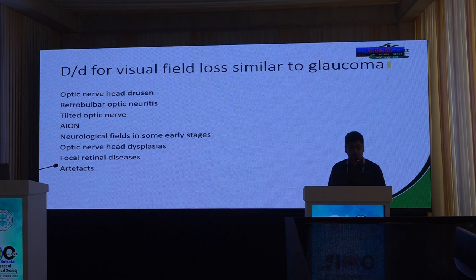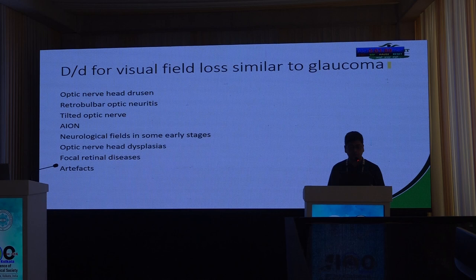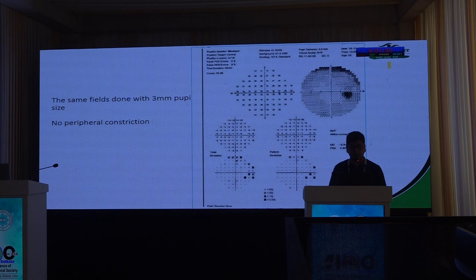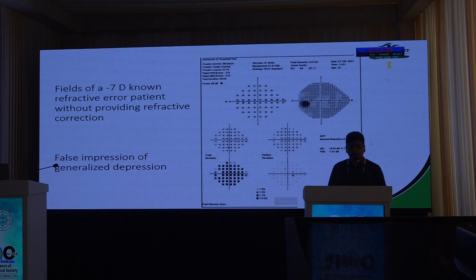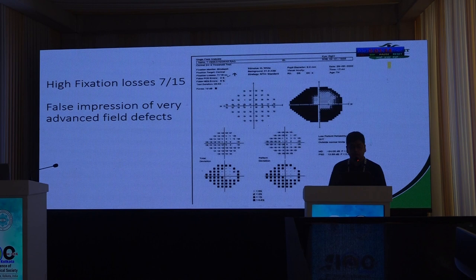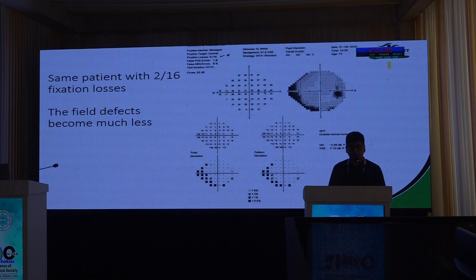Other conditions causing glaucoma-like field effects include optic nerve head drusen, tilted optic nerve, and AION. Common mistakes to avoid: a pupil less than 3 mm gives false peripheral constriction which resolves with correct pupil size; a -7 diopter refractive error without correction shows generalized depression on total deviation but not pattern deviation, which normalizes with correct correction. High fixation loss errors produce very erroneous fields. Also be aware of glaucoma mimickers — an optic disc pit can produce a superior arcuate-type defect.